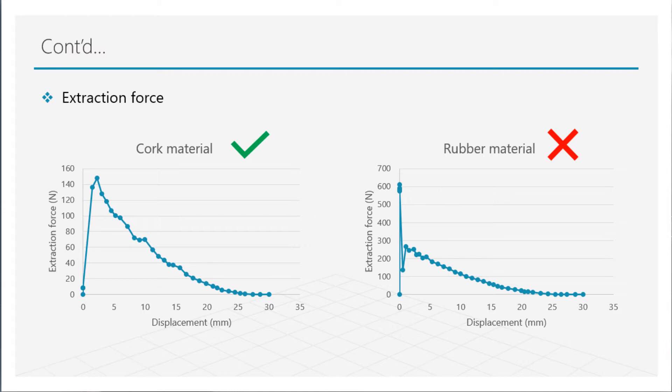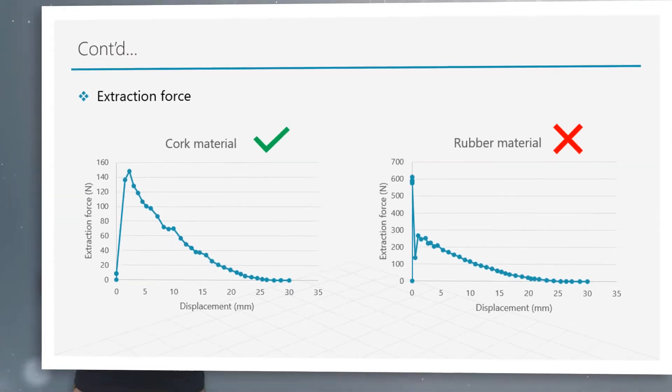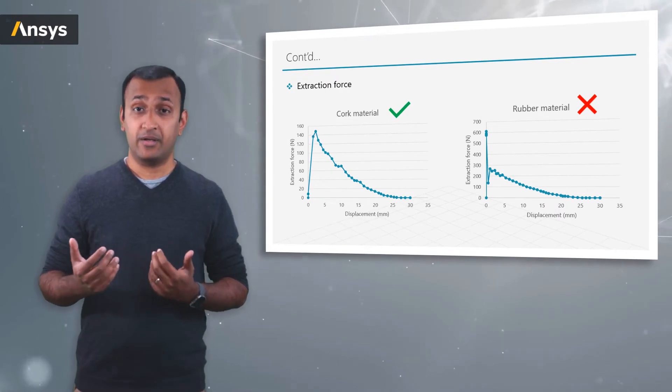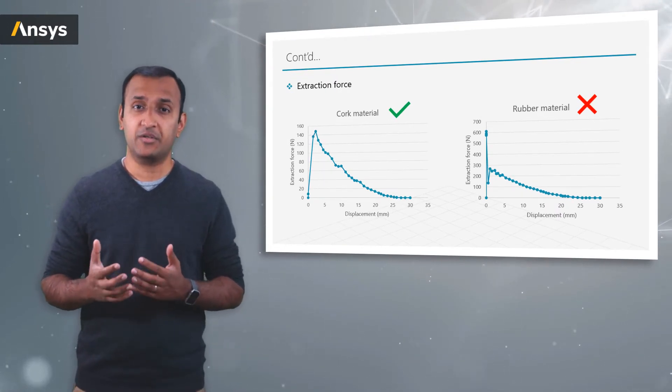This is again explained due to the compressible nature of the cork. It won't increase the internal forces due to volume change, so it can keep the extraction force down in comparison to the stopper with same dimensions made of rubber, which is nearly incompressible.